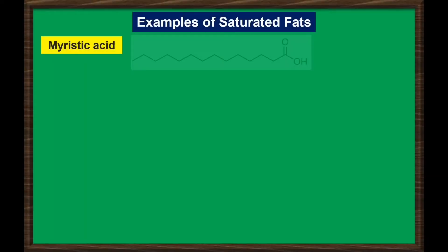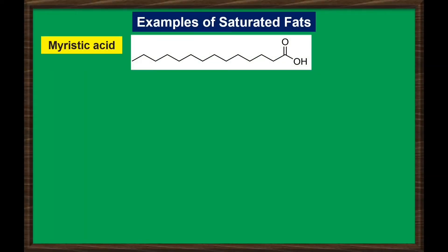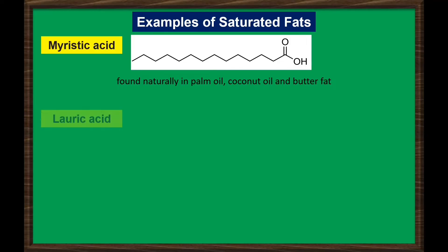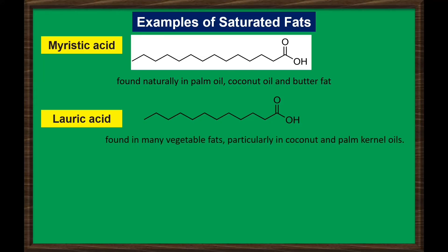Myristic acid is 14 carbon atoms long and is found naturally in palm oil, coconut oil, and butter fat. Lauric acid is 12 carbon atoms long, found in many vegetable fats, particularly in coconut and palm kernel oils. It is used as food vegetable shortening and in making soap and shampoos.